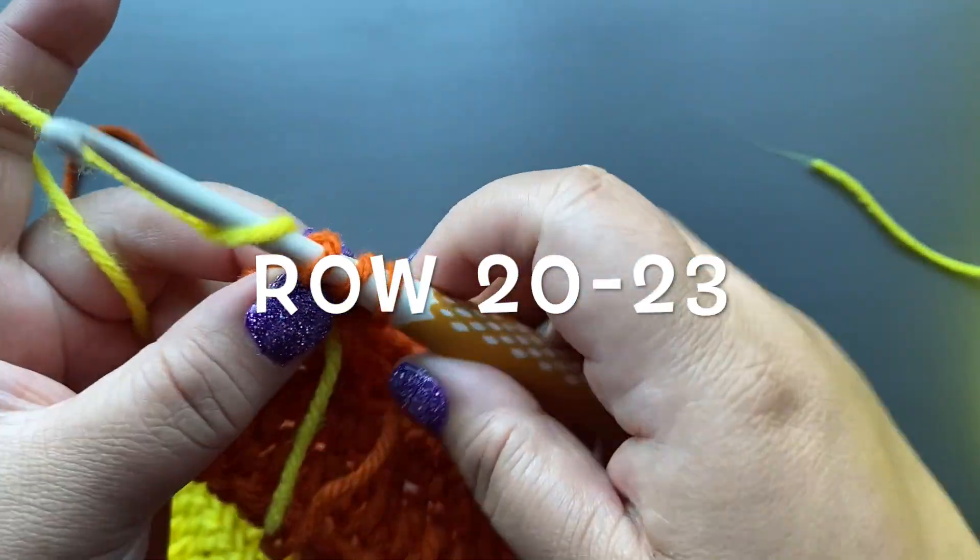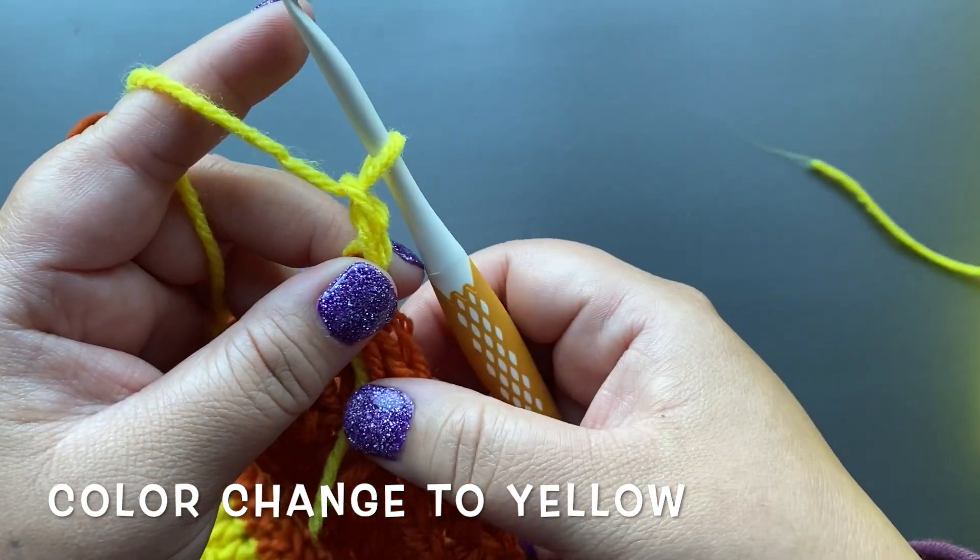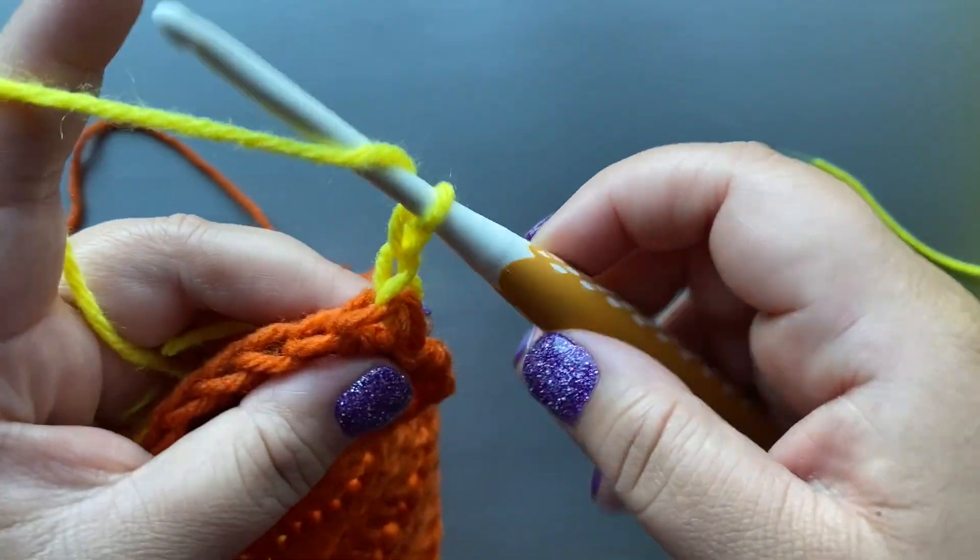At the end of row 19, color change to yellow. Continue to crochet with the yellow for four rows.